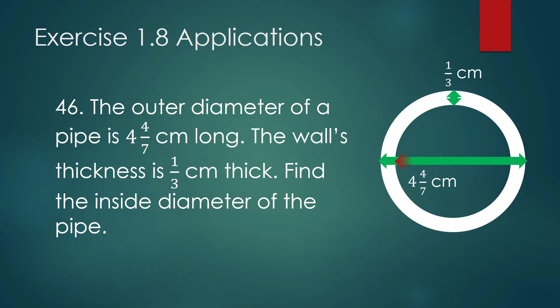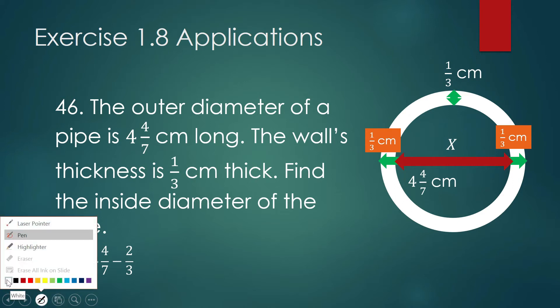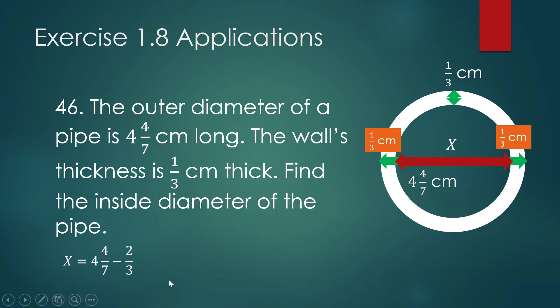We need to find the inside diameter. Most students get this wrong — you will not just take away one-third; you will take away two one-thirds. x is equal to the length of the outer diameter minus two times the thickness of the pipe. Two times one-third centimeter is two over three centimeters. So let us work on this subtraction.